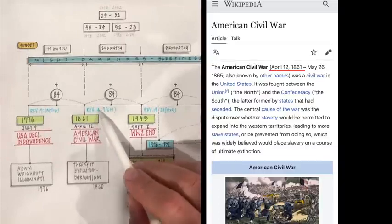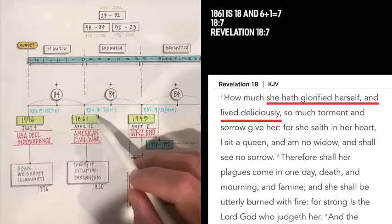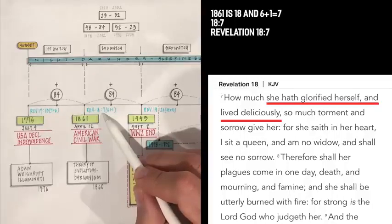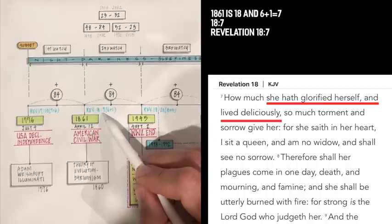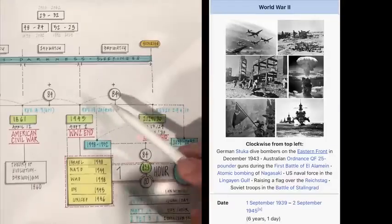So, look at this. 18.61. That's Revelation 18.6 plus 1 is 7. And Revelation 18:7 says, How much she has glorified herself and lived deliciously, so much torment and sorrow give her. For she said in her heart, I sit as a queen, and I am no widow, and shall see no sorrow. And here we go.